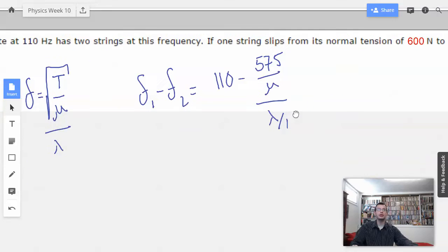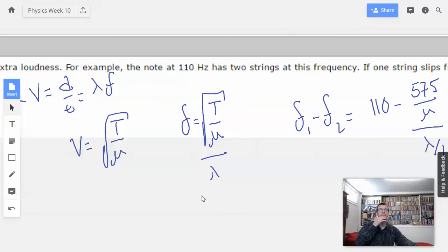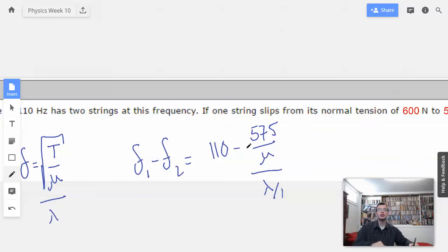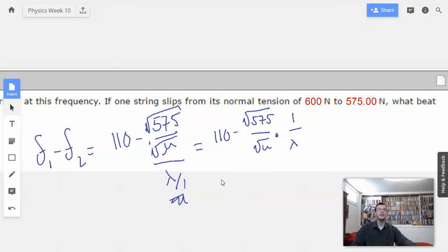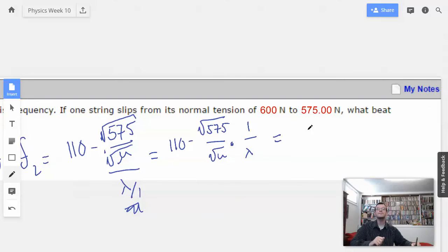Divided by lambda. So I'm going to square root it. So I'm going to break up this square root into two square root portions, which equals 110 minus square root 575 over square root of mu.